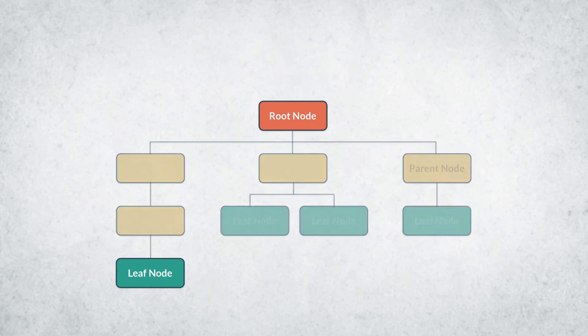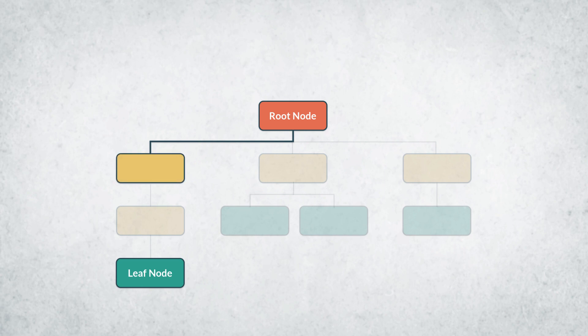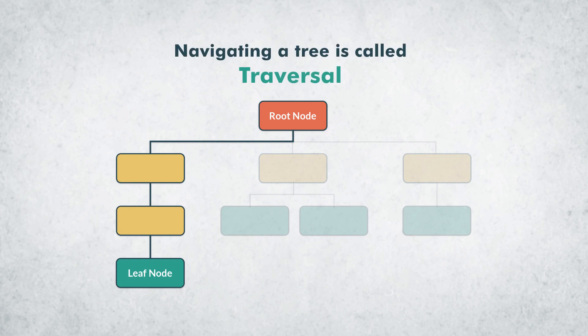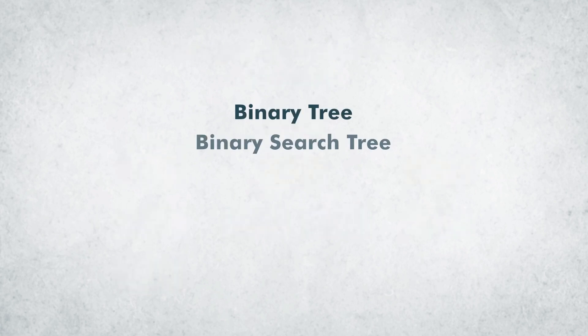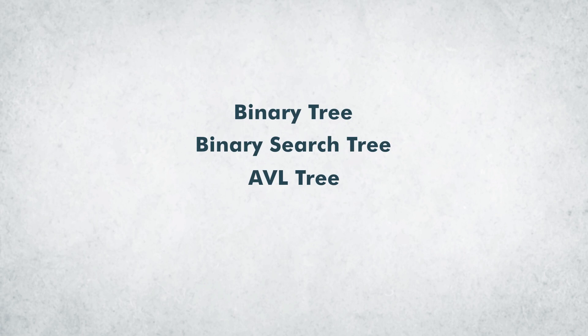The path between two nodes consists of the nodes that are visited while moving through the branches that connect them. This process of navigating a tree is called traversal. There are different tree types such as a binary tree, binary search tree, AVL tree, red-black tree, and many more.